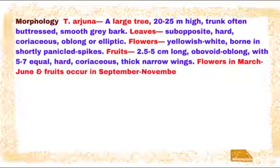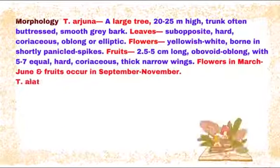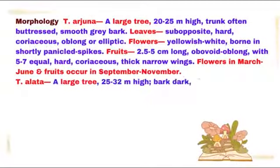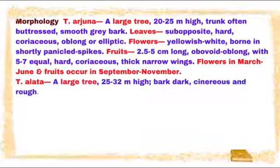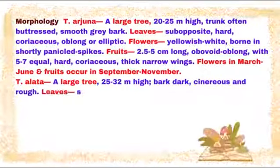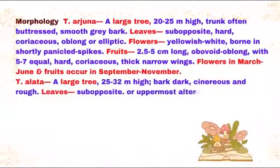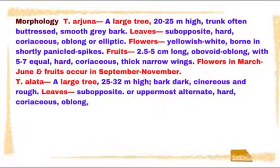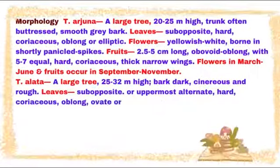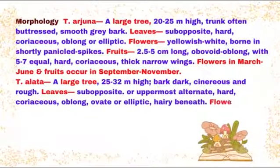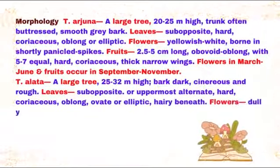Flowering occurs in March–June; fruits occur in September–November. Morphology of Terminalia Alata: It is a large tree, 25–32 meters high. Bark is dark, cinerous, and rough. Leaves are sub-opposite or uppermost alternate, hard, coriaceous, oblong-ovate or elliptic, and hairy beneath.